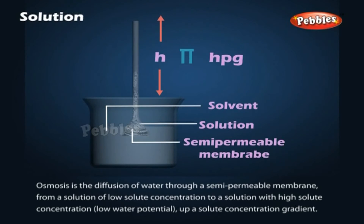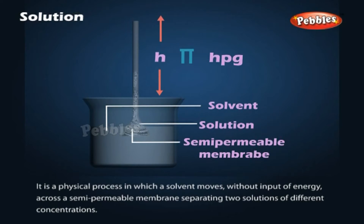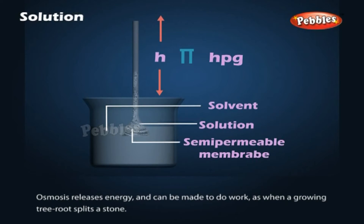Osmosis is the diffusion of water through a semi-permeable membrane from a solution of low solute concentration to a solution with high solute concentration, up a solute concentration gradient. It is a physical process in which a solvent moves without input of energy across a semi-permeable membrane separating two solutions of different concentration. Osmosis releases energy and can be made to do work, as when a growing tree root splits a stone.